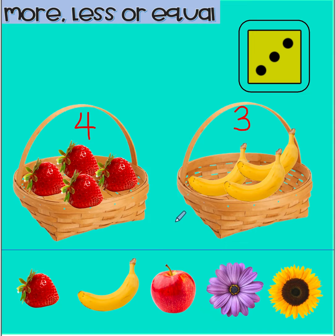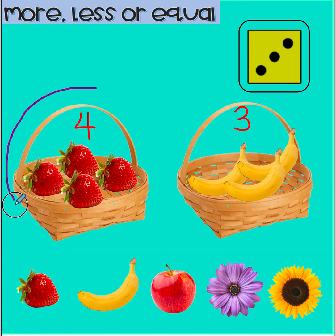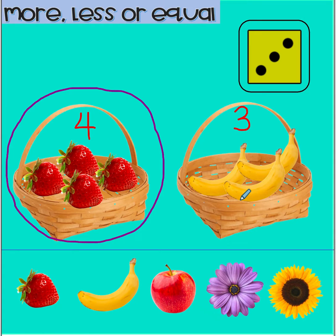Now let's see. Let's try to compare which basket has more fruits — is it the basket with the strawberries or the basket with bananas? Which is more? Great thinking! The basket with four strawberries is more than the basket with three bananas. Now which basket has less fruits? Awesome! The basket that has three bananas is less than the basket with four strawberries.